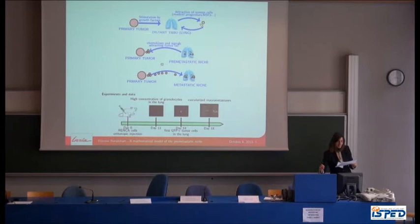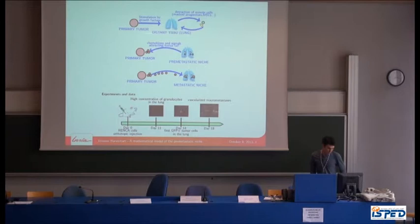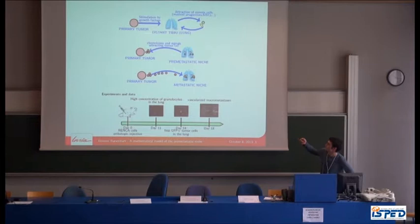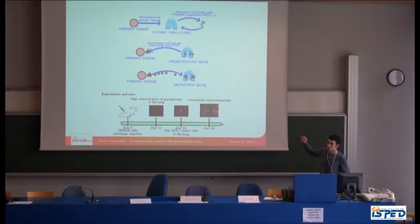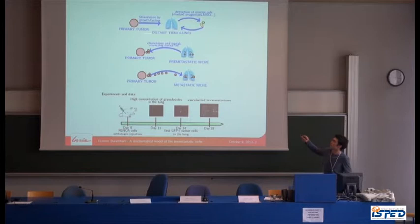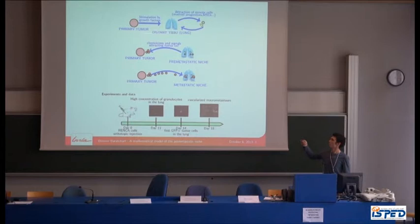First speaker is Etienne Baratja. This work consists of the study of the pre-metastatic niche. The biological concept is the following: there is a primary tumor which secretes some factors, like growth factors, which stimulate distant tissue, for example the lung, which in response attracts some remote cells, like bone marrow-derived cells, which will pre-colonize the organ and secrete some chemokines to attract circulating tumor cells and some matrix-remodeling factors for tumor cell engraftment.